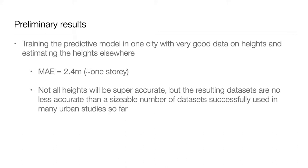Using the geometry of footprints in OpenStreetMap resulted in height predictions with a mean absolute error of 2.4 meters, which is above the height of one story. This is not extremely accurate, but it's also not bad given the circumstances, and it might be better than nothing. We think that the 3D models generated with this level of accuracy will still be useful for some use cases that would otherwise not be possible because of the lack of data.